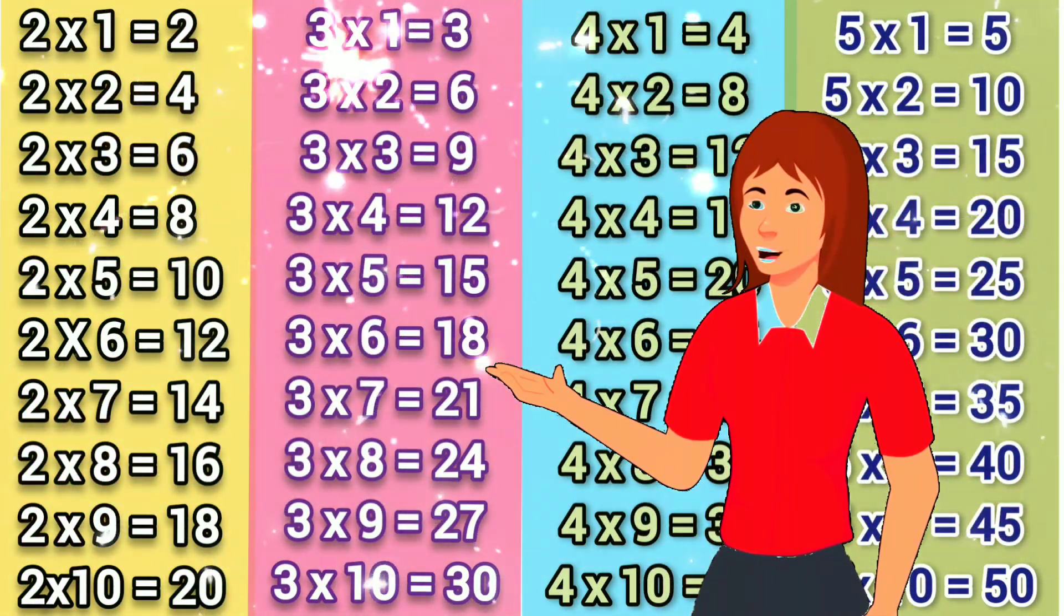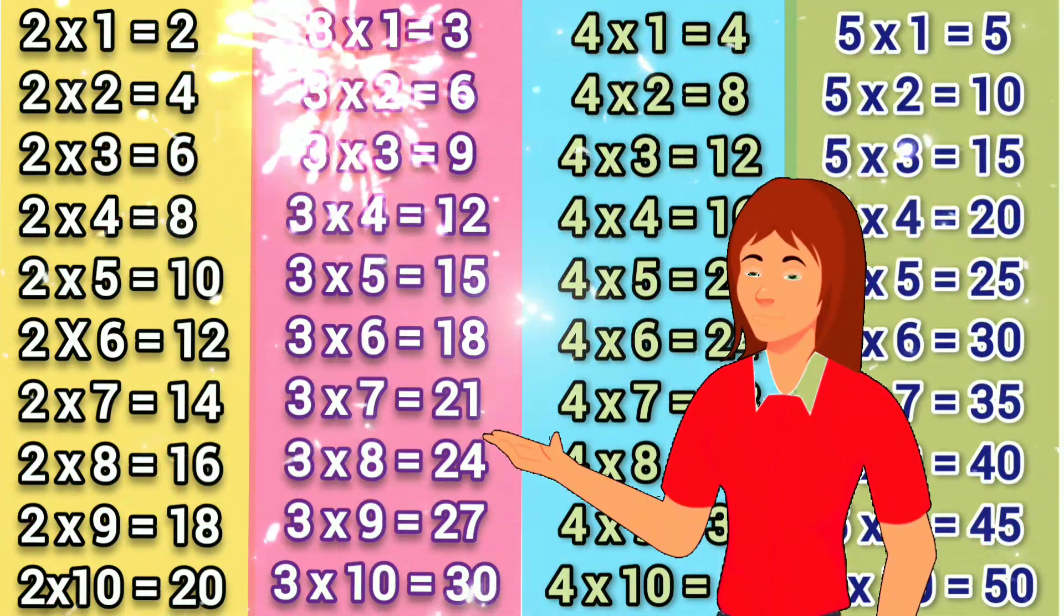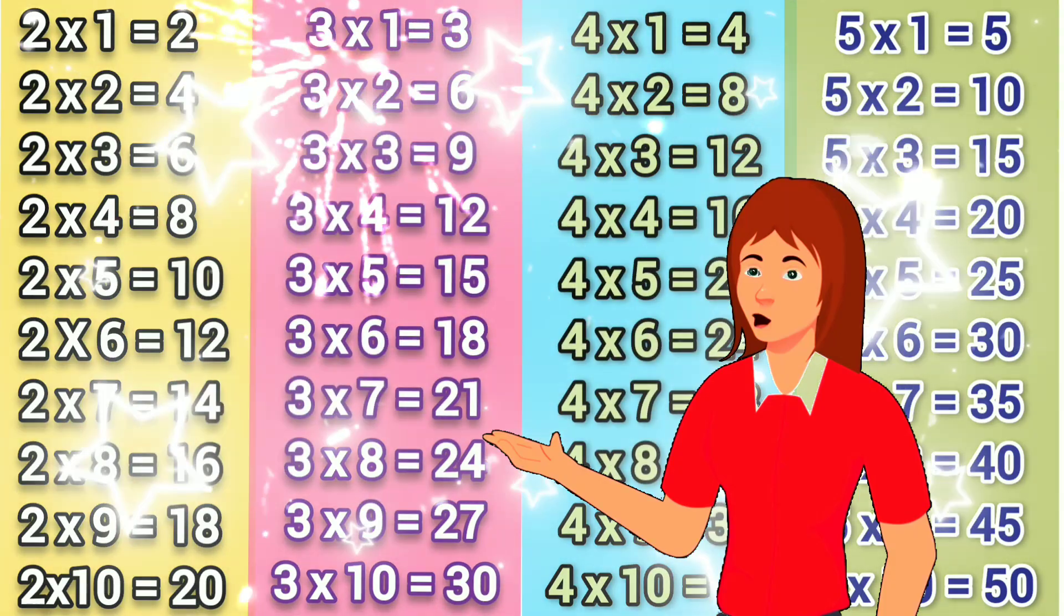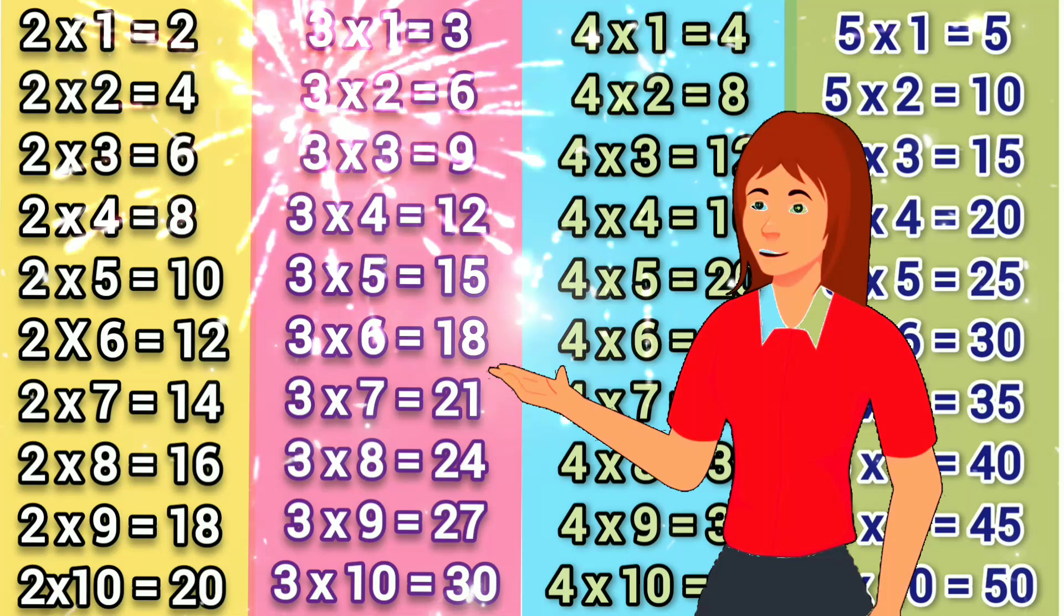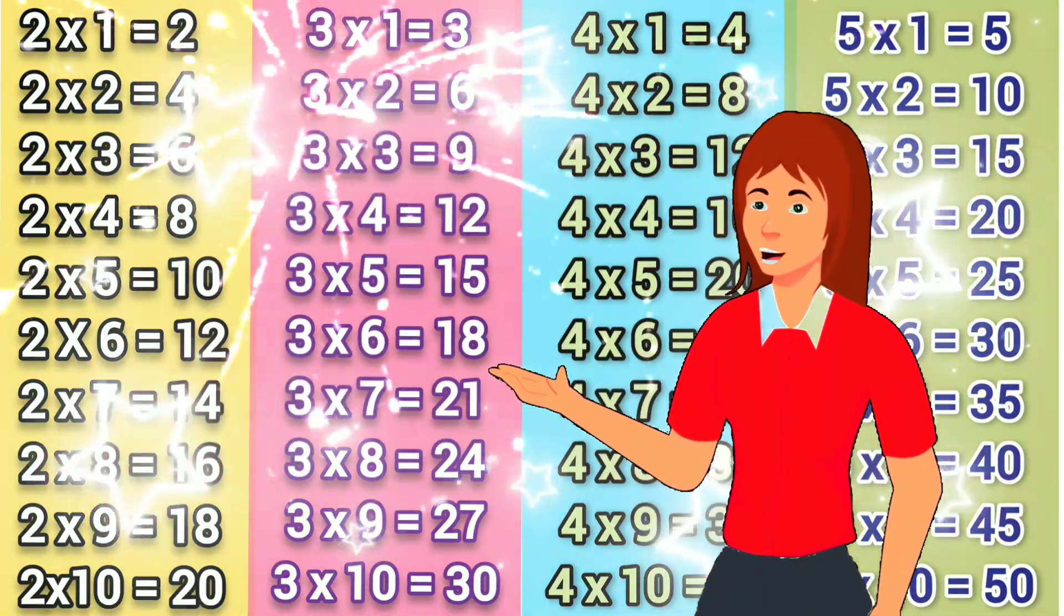3 6's are 18, 3 7's are 21, 3 8's are 24, 3 9's are 27, 3 10's are 30,